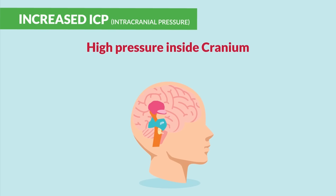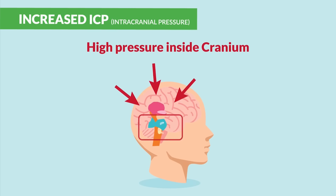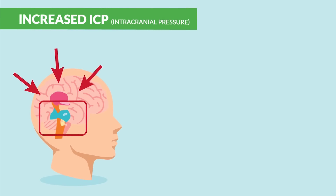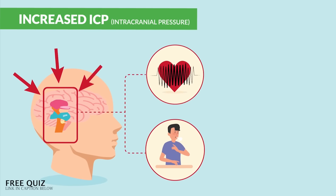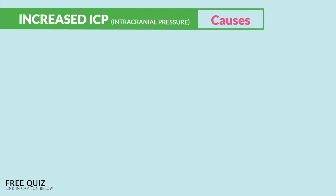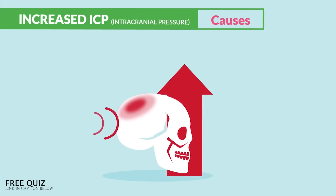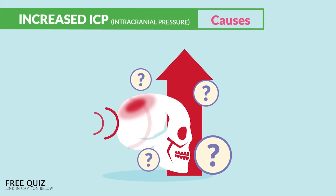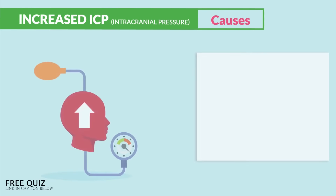Let's break down the word — let the name help you here. Increased intracranial pressure: just think high pressure inside the cranium, the head, which puts loads of pressure on the brain, eventually squashing the brain stem which controls breathing and heart rate. And this eventually kills the patient.